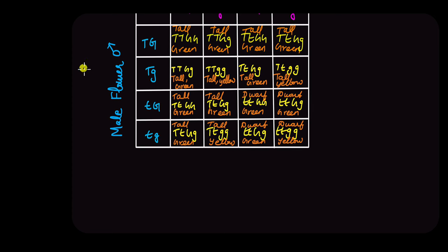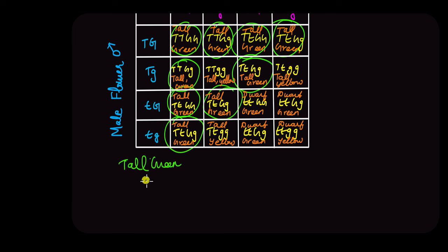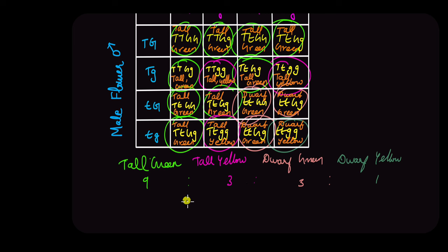Now with this, if we were to write the phenotypic ratio for the different phenotypes produced here, we will start with tall green. So there are 1, 2, 3, 4, 5, 6, 7, 8, 9 possible offsprings out of the 16 total offsprings having tall green traits. So that's 9. Then we have tall yellow, that is 1, 2, 3. So tall yellow is 3. Then we have dwarf green, that is 1, 2, 3. Finally, we have dwarf yellow, which is just 1. So this ratio, 9 is to 3 is to 3 is to 1.